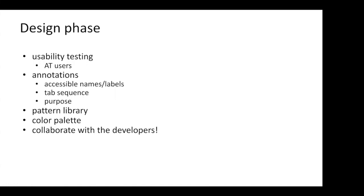We're going to be covering annotations — specifically accessible names, labels, tab sequence, reading order, and the purpose of elements. Part of the design phase that I think is really important is having a pattern library — having a bunch of reusable components at your fingertips to orchestrate an app. If those patterns and components have accessibility baked in, your job is a lot easier.